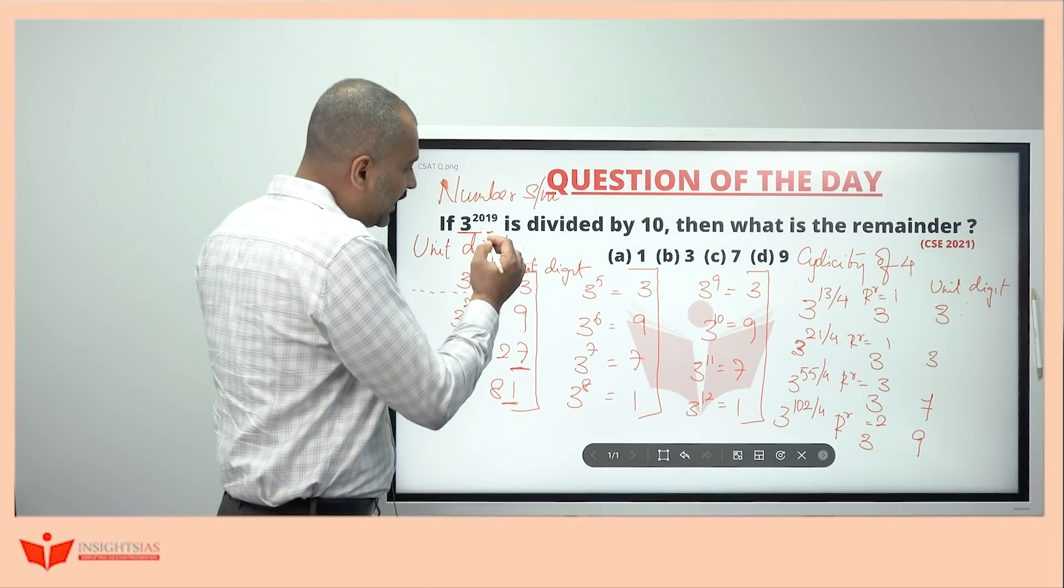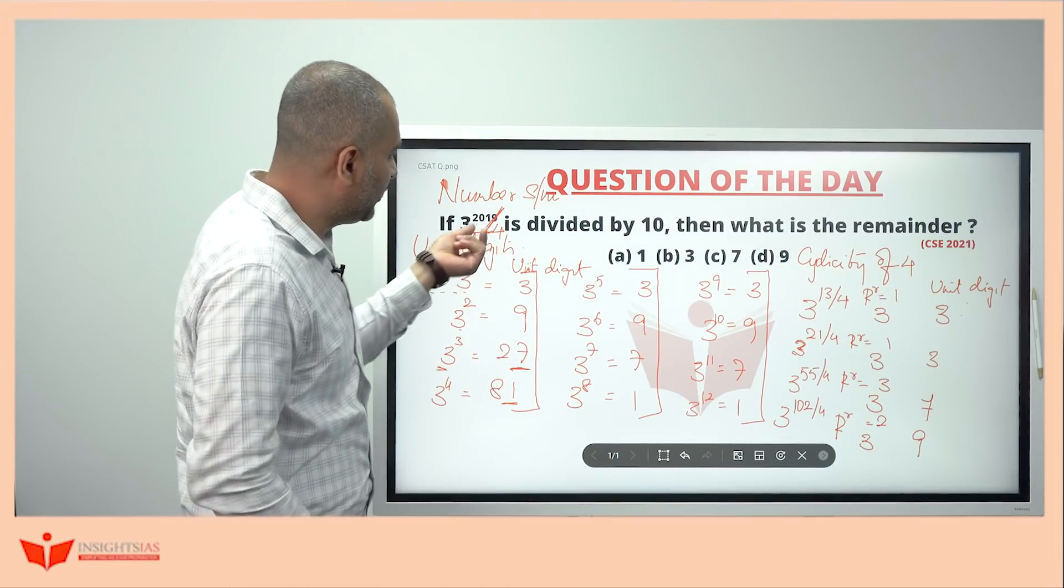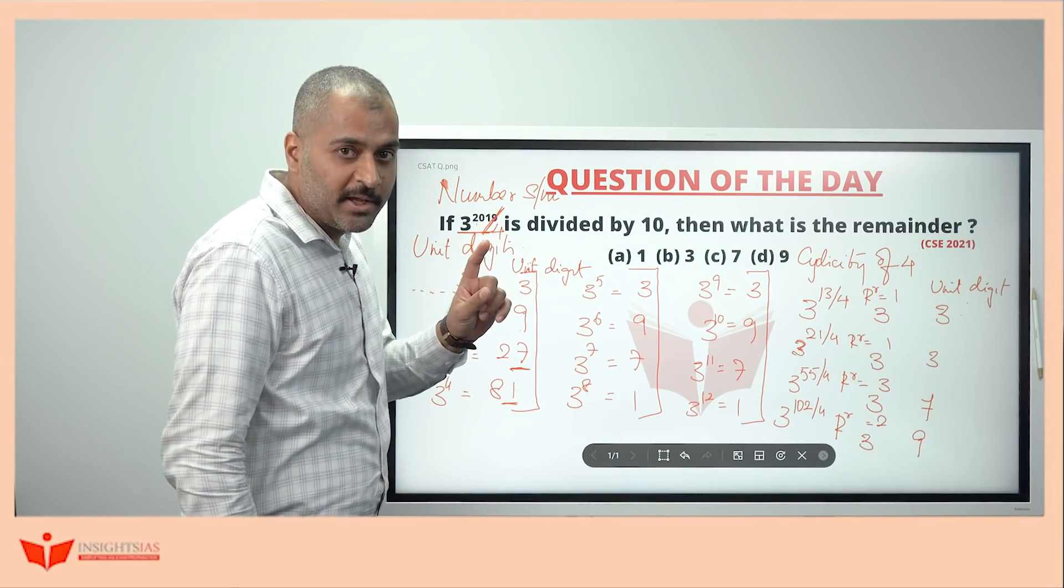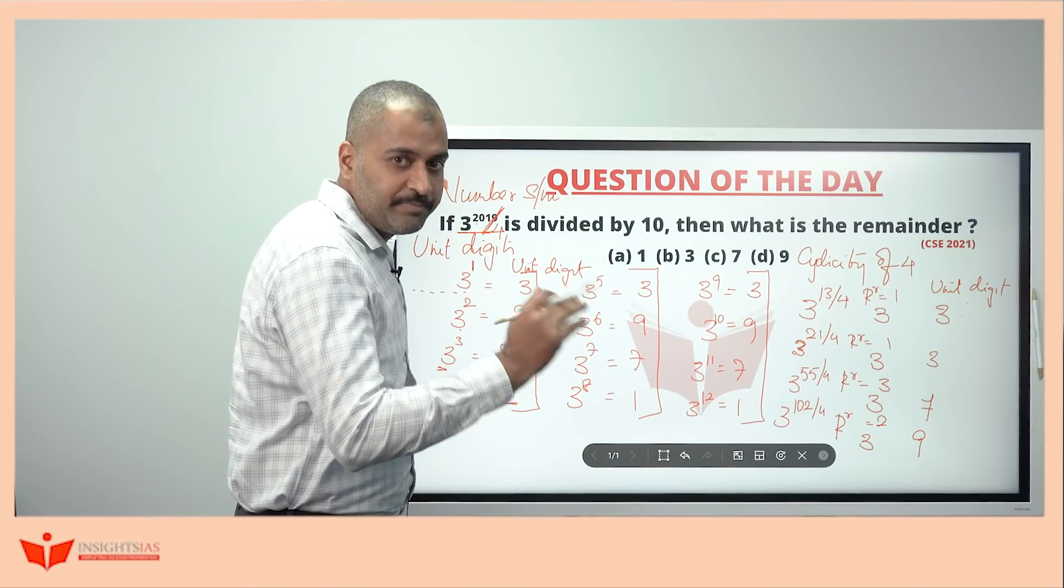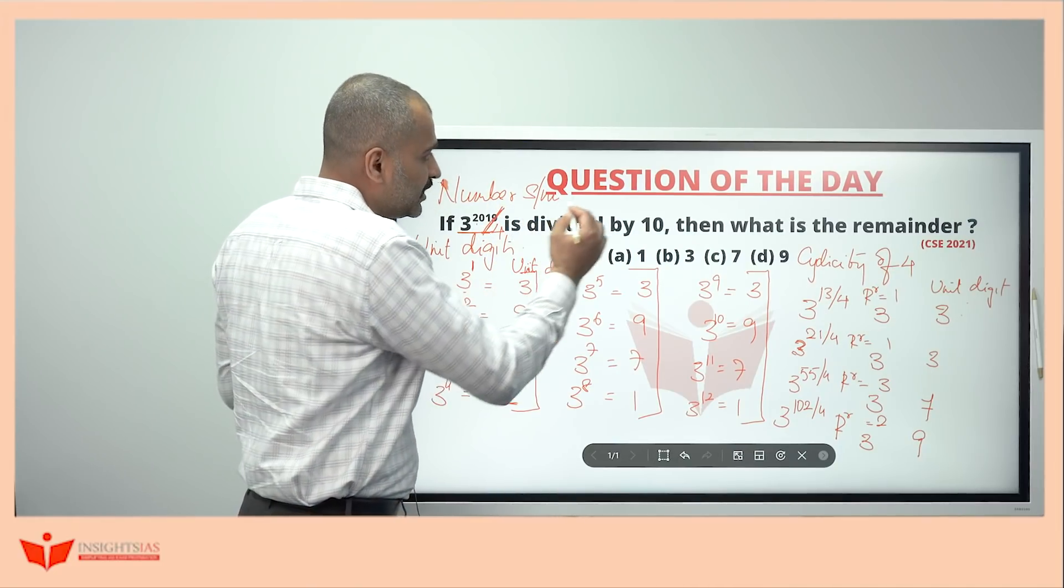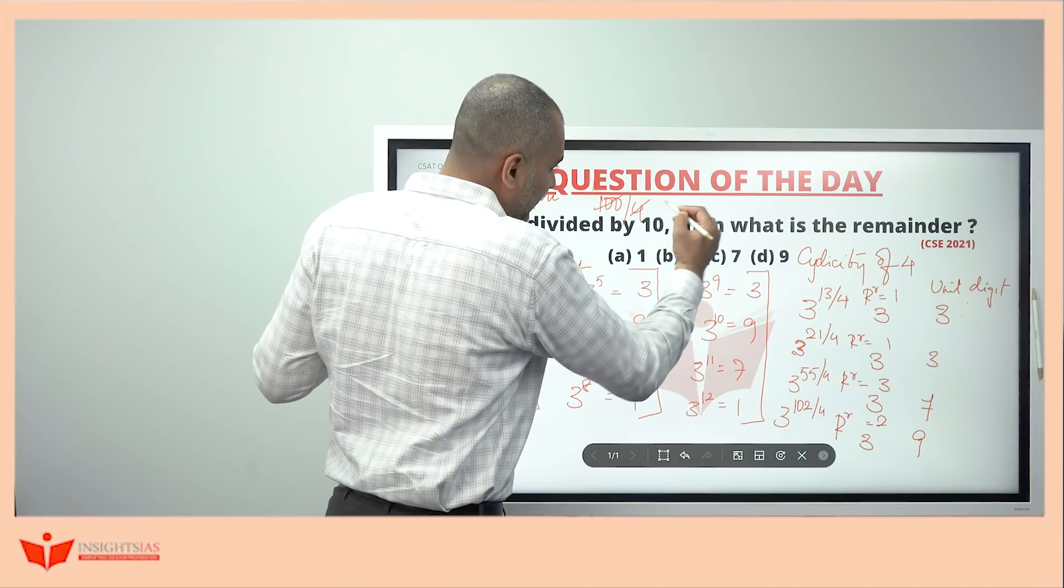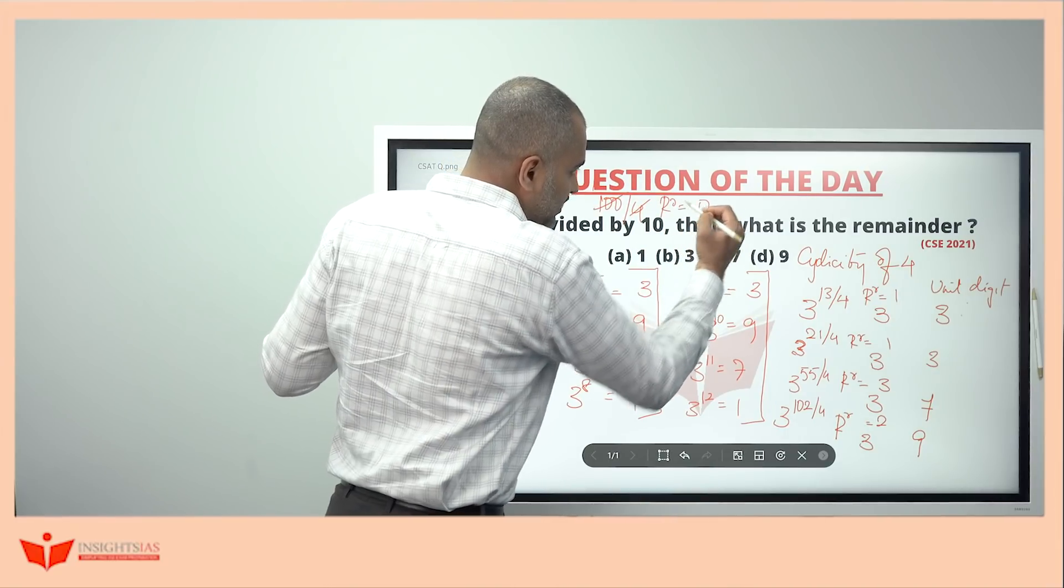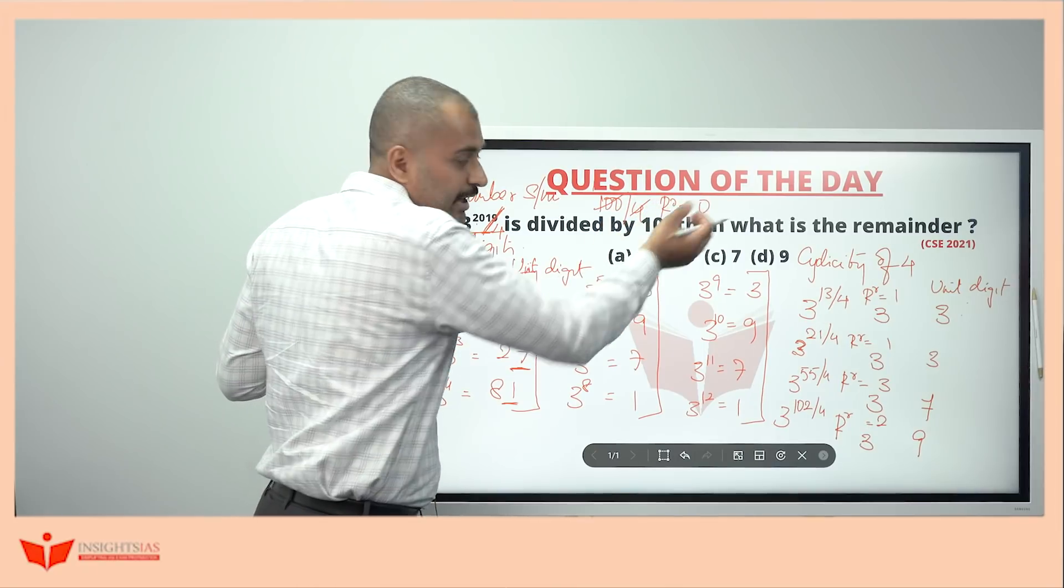Now, similarly, when I divide this by 4. Look here. 2019. I am dividing this by 4 here. 100 is always divisible by 4. If 100 is divisible by 4, divisible by 4 means 100 divided by 4 completely it gets divided. Remainder in this case is equal to 0. 200 divisible by 4, yes, remainder is 0.